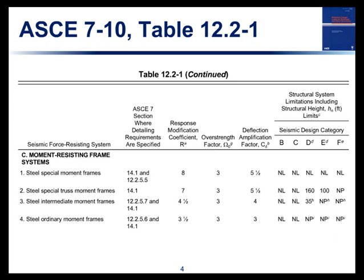Today we are talking about the moment frame systems. We'll focus primarily on special steel moment frames. We won't really cover special truss moment frames or ordinary frames, but we will look at intermediate moment frames as well. The response modification factor R — a measure of the ductility of the system — is eight for special moment frames and goes down to four and a half for intermediate moment frames.